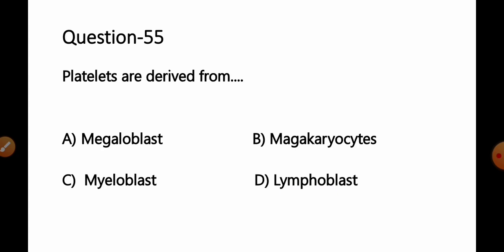Question number 55: Platelets are derived from — option A: megaloblast, B: megakaryocytes, C: megaloblast, D: lymphoblast. We have already discussed this question in our previous MCQ series. The correct answer is that platelets are derived from megakaryocytes. So option B, megakaryocytes, is the correct answer.